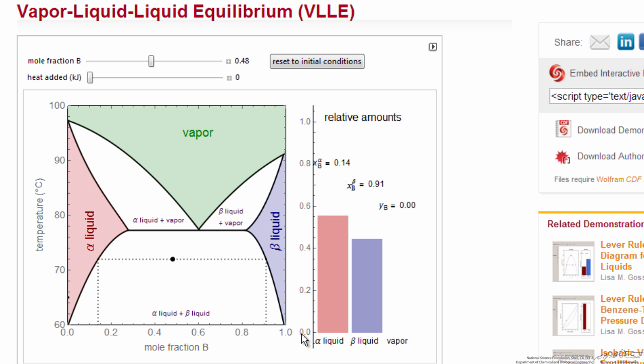We're starting where we have two liquids, slightly more alpha liquid than beta liquid for this mole fraction, and I'm going to add heat. I'll move this slider to the right, and we see some slight changes in the amount of phases. Then we reach this temperature about 77 or 78 degrees, and now notice we have three phases present.